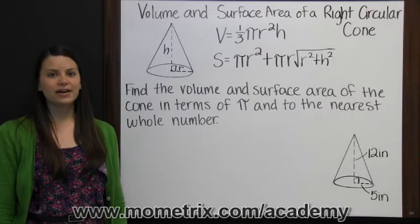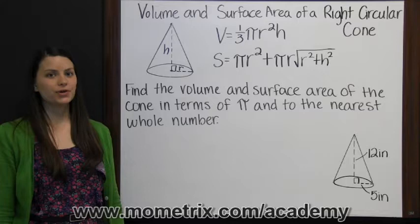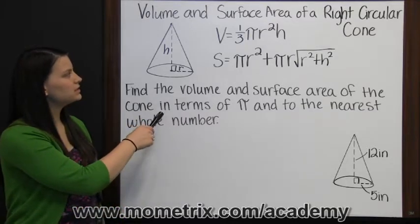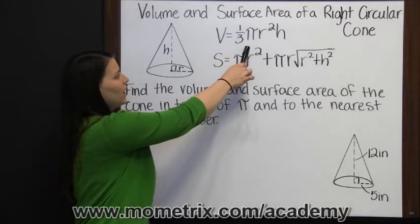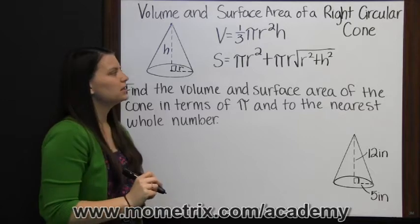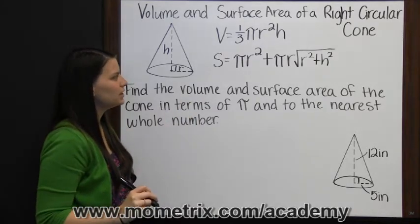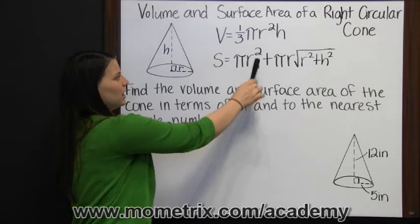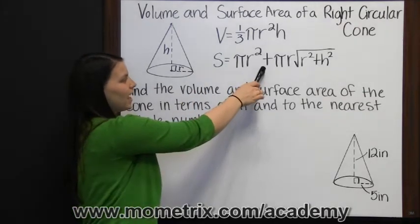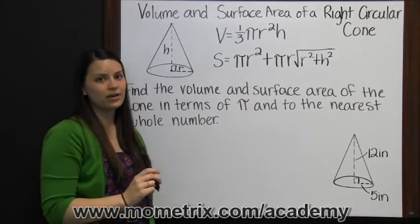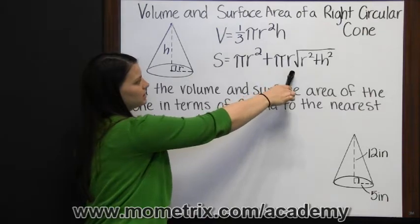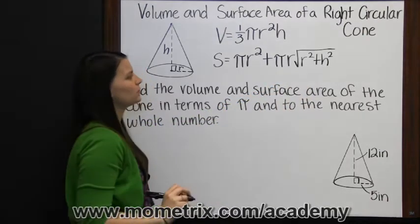Volume and surface area of a right circular cone. The volume of a cone is found by taking one-third times pi times the radius squared times the height. The surface area of a cone is found by finding the area of the base — a circle, pi times radius squared — and adding the lateral area, or the area around the side: pi times radius times the square root of radius squared plus height squared.